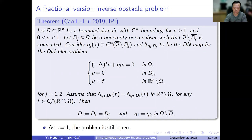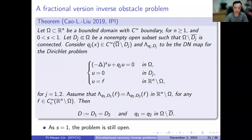For n equals 2, one can apply results of Yamamoto, Imanuvilov, or Günther for partial data. For n greater than or equal to 3, it remains open. For the fractional case, it helps solve both the unique determination of the cavity and the unique determination of the coefficient. For cavity determination alone, only one single measurement is needed — just one nonzero F measured once, and we can determine the cavity.